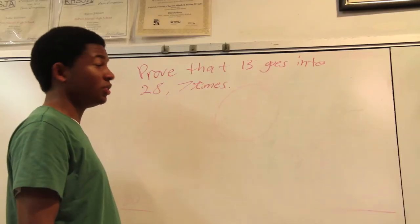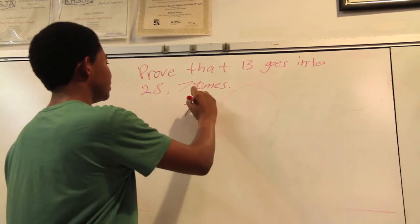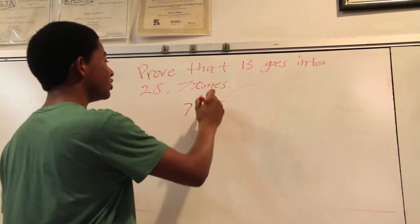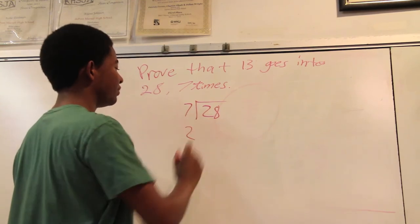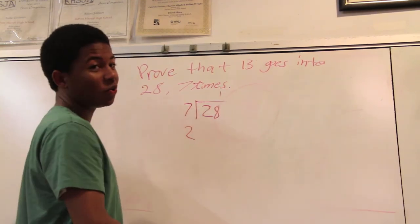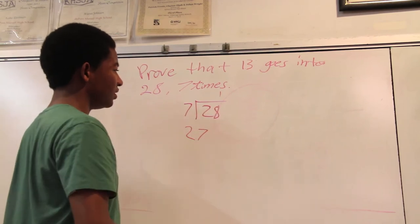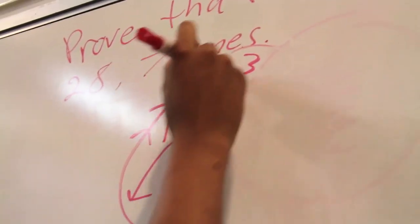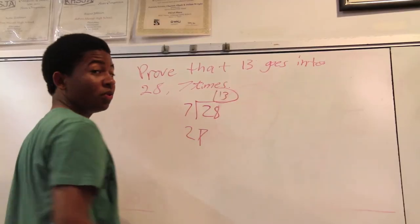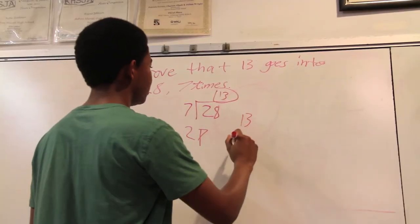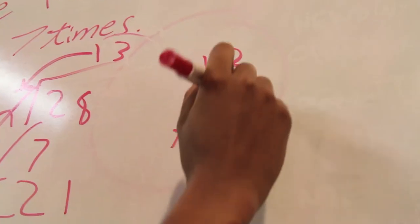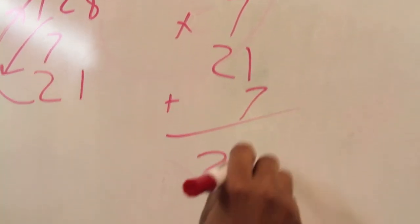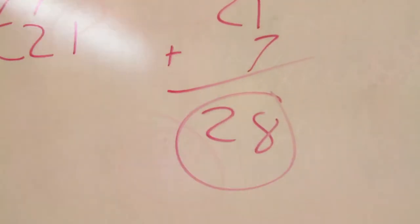Prove that thirteen goes into twenty-eight seven times. That's so easy. So, put seven divided by twenty-eight. Watch this. Seven doesn't go into two, so we just skip it and save it for later. Seven goes into eight one time. One times seven? Seven. That's easy. Now, we just subtract that from eight and we get one. So, twenty-one goes into seven? Three times. Thirteen's the answer. Watch this. Thirteen times seven. Seven times three? Twenty-one. Seven times one? Seven. Adam and Kevin. Twenty-eight. Easy.